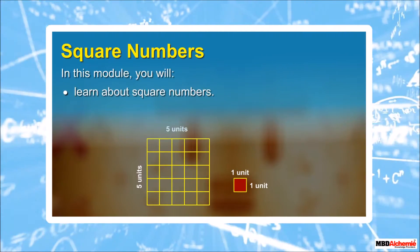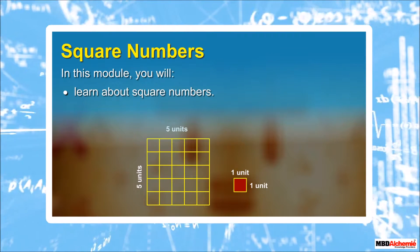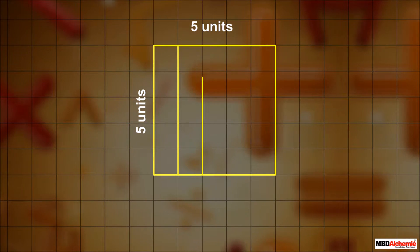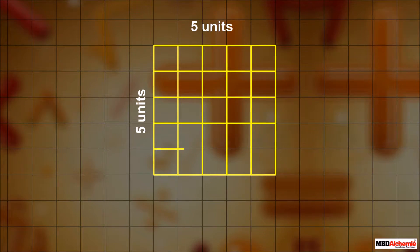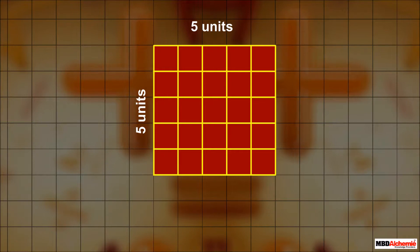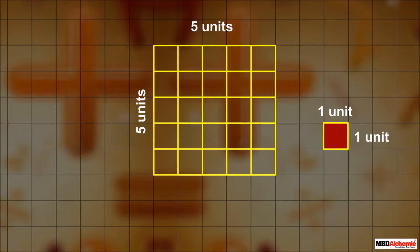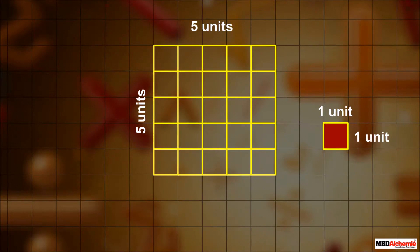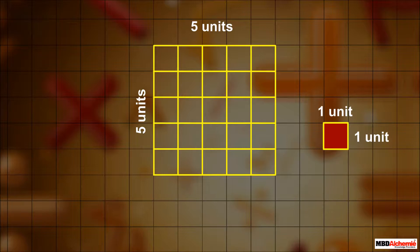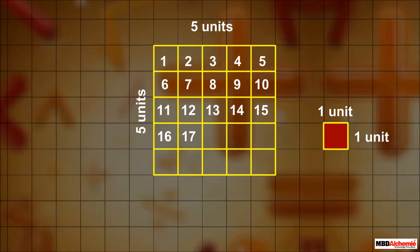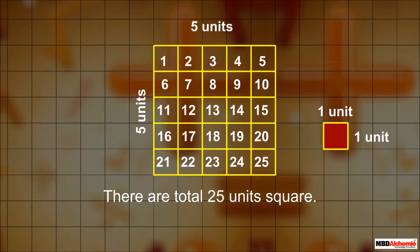In this module, you will learn about square numbers. Let us consider a square of length 5 units. Divide this square into 5 columns and 5 rows to get equal square blocks. Each block represents one unit square, as the columns and rows are drawn at a unit distance from each other.